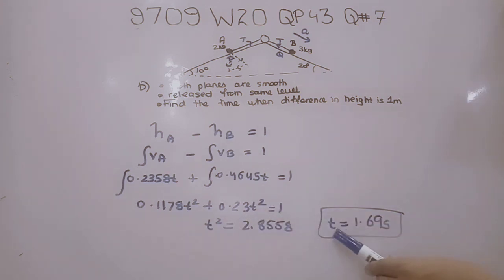Ignoring negative time, the positive T is 1.69 seconds. So for a time of 1.69 seconds, the difference between heights is 1 meter.